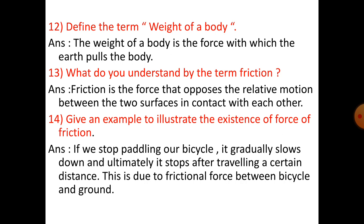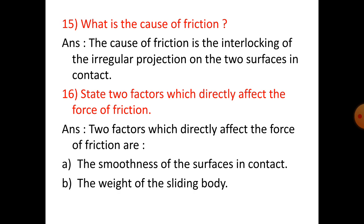Question 14: Give an example to illustrate the existence of force of friction. If we stop paddling our bicycle, it gradually slows down and ultimately stops after traveling a certain distance. This is due to frictional force between bicycle and ground. Question 15: What is the cause of friction? The cause of friction is the interlocking of irregular projections on two surfaces in contact. Question 16: State two factors which directly affect the force of friction. Two factors are: the smoothness of surfaces in contact, and the weight of the sliding body.